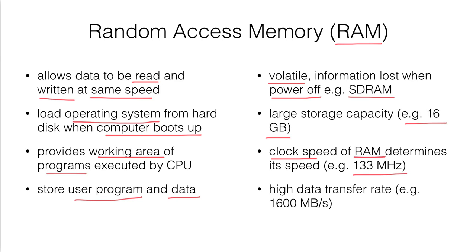You can notice that the clock speed of the RAM is much lower than the CPU. RAM is actually slower than the CPU — the CPU is the fastest device in the computer. And since RAM is made of silicon, the data transfer rate is also high, at around 1600 MB per second.